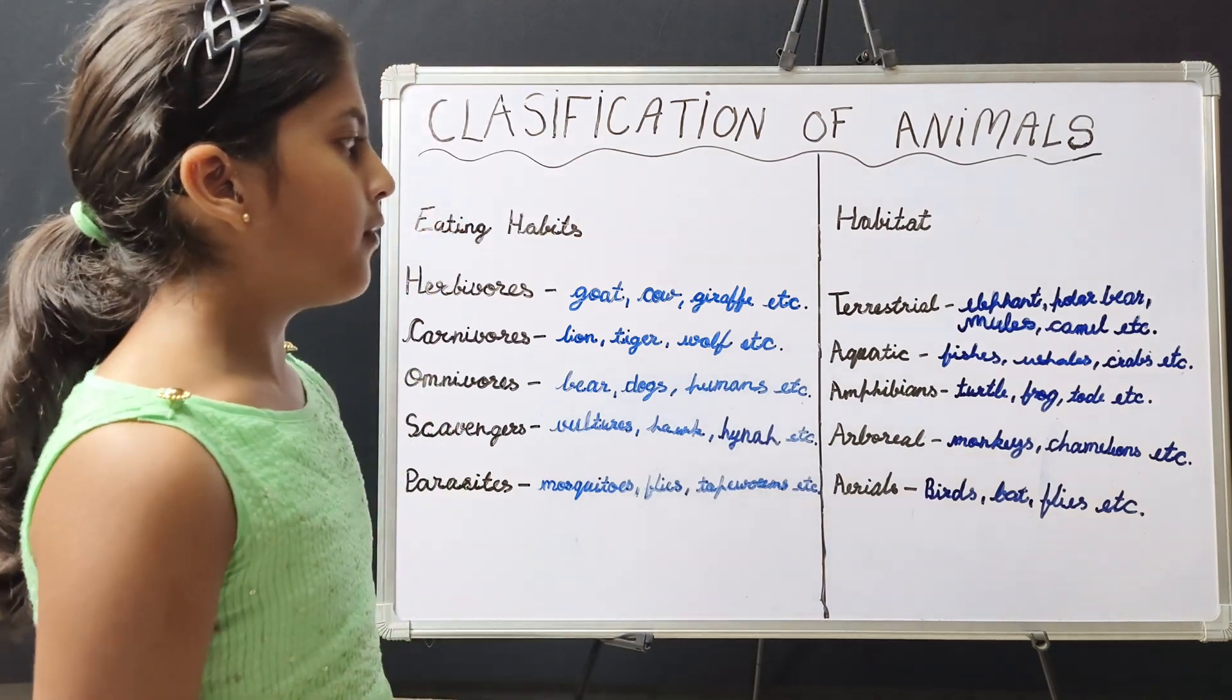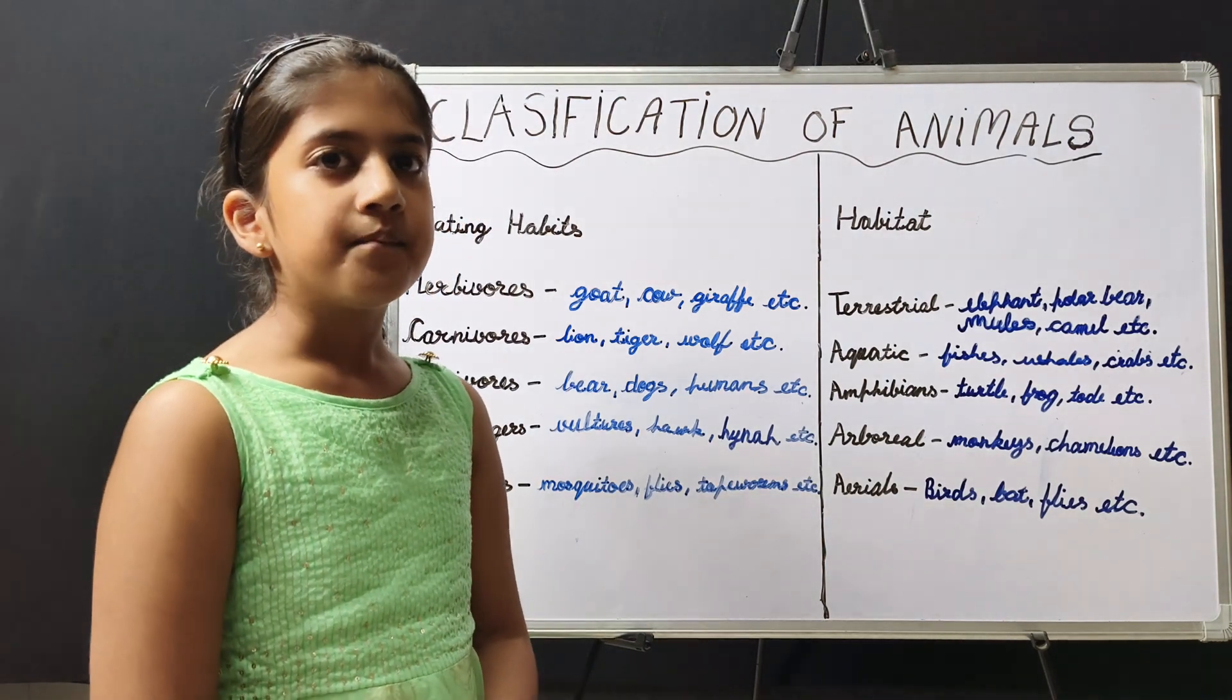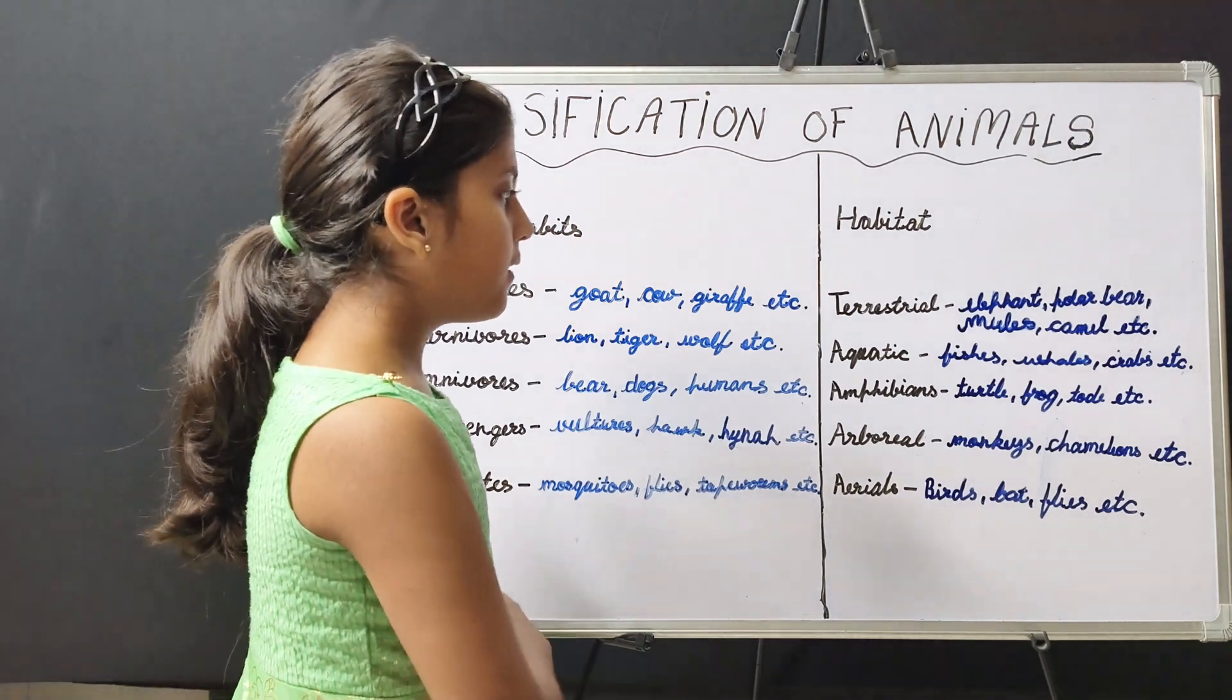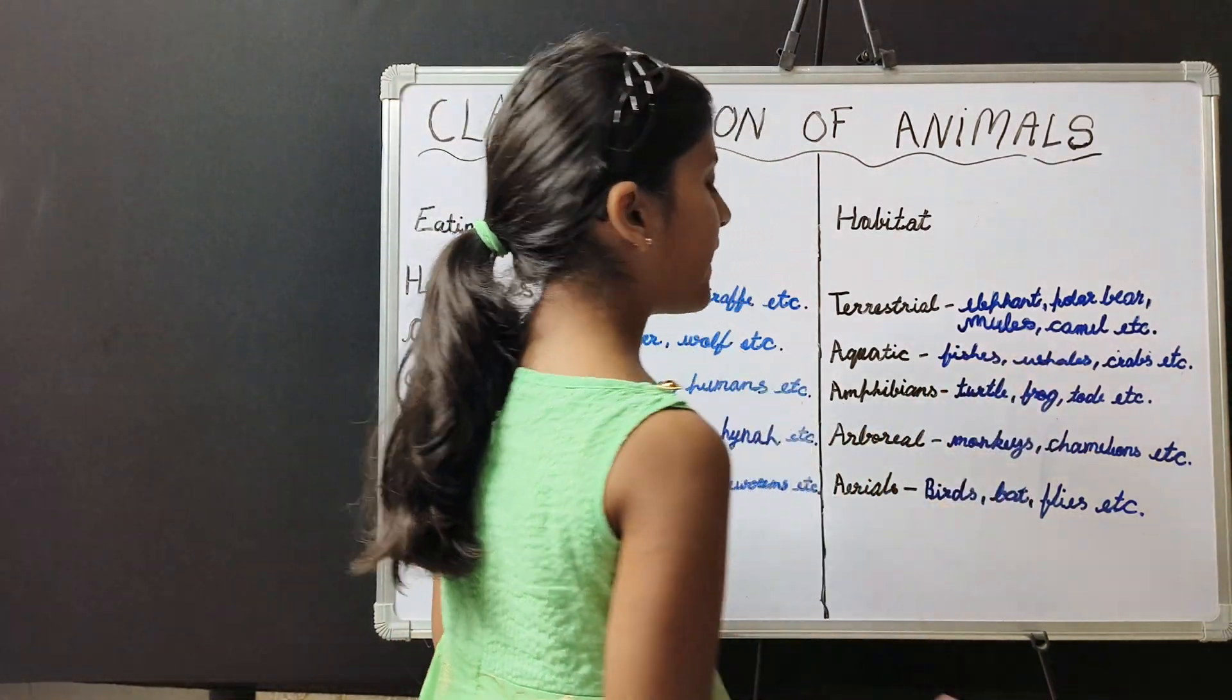Amphibians are those animals which live on land and water both. For example, turtle, frog, toad, etc.